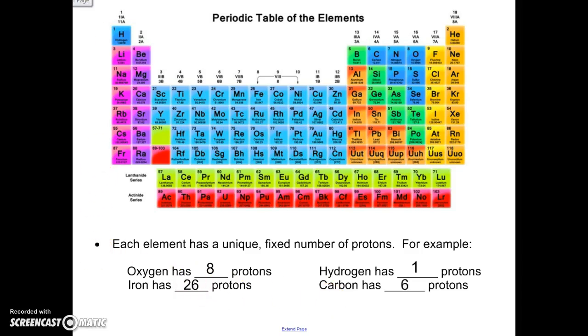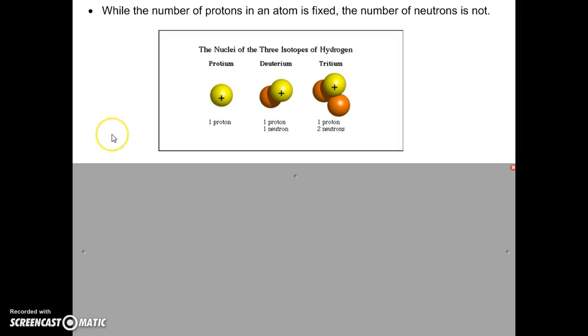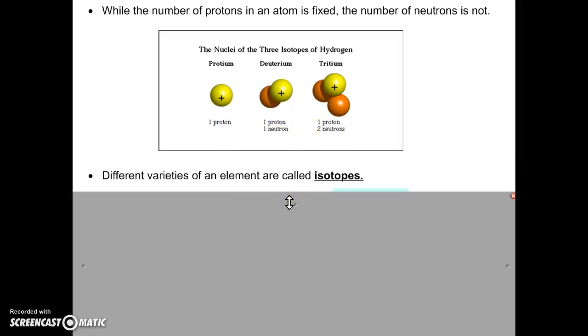Now, while the number of protons is fixed, the number of neutrons is not. So here we have three different types of hydrogen. They all have one proton because hydrogen has to have one proton. But you'll notice they have different numbers of neutrons. In this first variety there are no neutrons. In this type of hydrogen there's one neutron, and in this type there are two neutrons. Different varieties of an element are called isotopes.